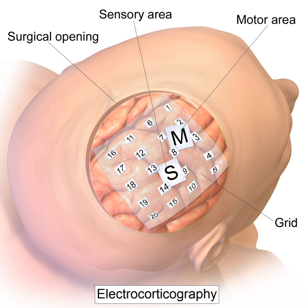ECoG has recently emerged as a promising recording technique for use in brain-computer interfaces. BCIs are direct neural interfaces that provide control of prosthetic, electronic, or communication devices via direct use of the individual's brain signals. Brain signals may be recorded either invasively, with recording devices implanted directly into the cortex, or noninvasively, using EEG scalp electrodes. ECoG serves to provide a partially invasive compromise between the two modalities: while ECoG does not penetrate the blood-brain barrier like invasive recording devices, it features higher spatial resolution and a higher signal-to-noise ratio than EEG.